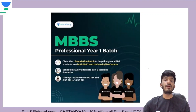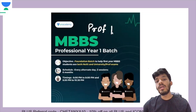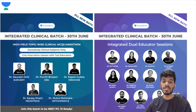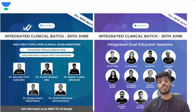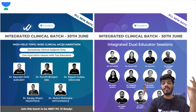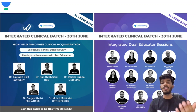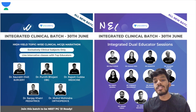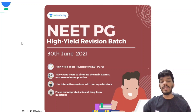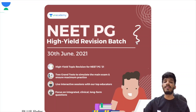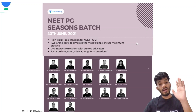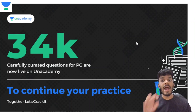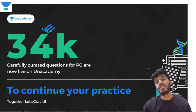We have amazing batches on Unacademy. We started batches for your prof exams — not just APG — for first prof, second prof, third prof, and even final prof. We also have integrated clinical batches based on MCQs, dual educator sessions integrating subjects like pathology and radiology, in accordance with the latest NEXT examination pattern. For NEAT PG we have a highly revision batch started on 30th June, and batches for FMG, INICET, and the NEXT examination. We have an MCQ question bank of over 34,000 MCQs for you to practice.